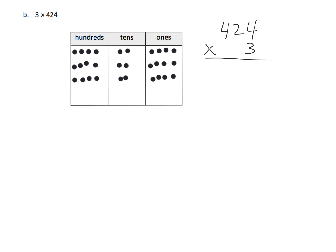Now let's represent that over here in our partial products. How many ones do we have? We have three groups of four, so three times four is twelve — we have twelve ones. How did we get that? We did three times four. Now taking a look at our tens, how many tens do we have? We have three groups of two, so three times two is six — that's six tens, which is sixty.